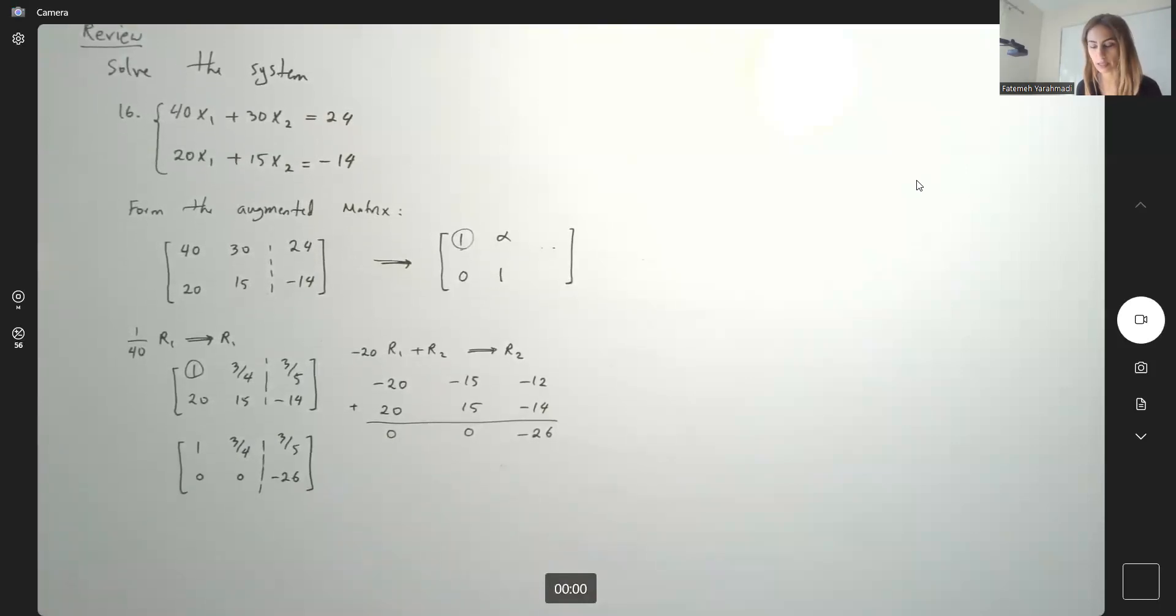So, what does it tell us? It tells us, if I convert this back into a system of linear equations, I end up with x1 plus 3 fourths x2 equals 3 over 5, and 0x1 plus 0x2 is negative 26. Or, the second equation tells me that 0 is equal to a number, which is contradiction.